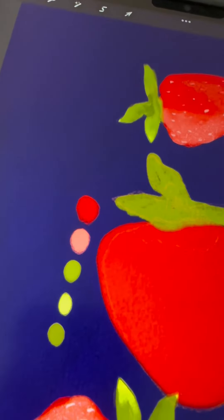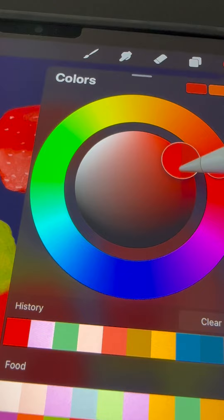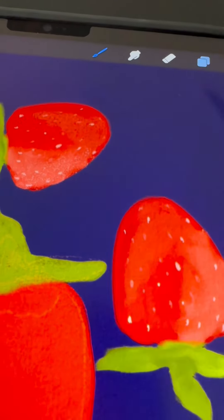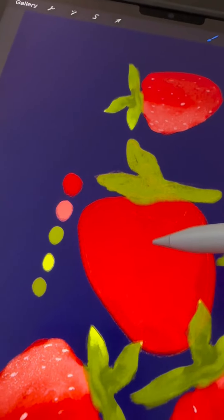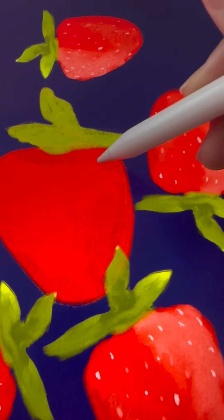We're going to start with picking a darker shade of the red that we used earlier for the base layer. I'm going to start with the bottom and then move up a little bit on the right side and especially underneath the stamp.